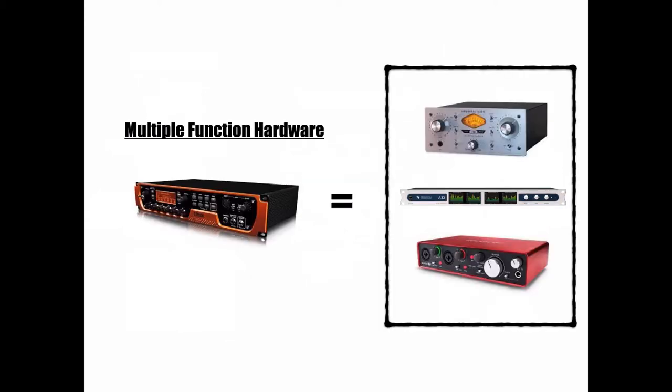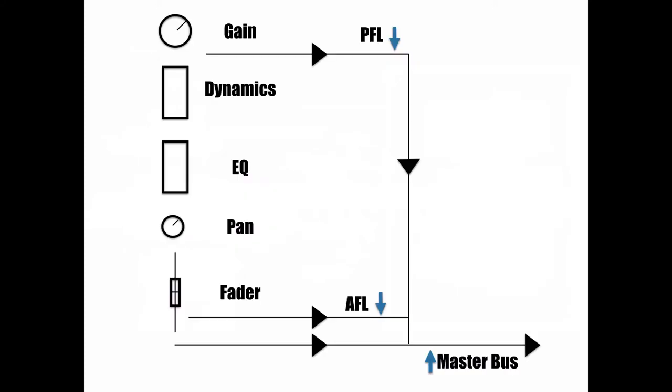Something to take note of is that there are devices out there that incorporate several of these steps in one device. For example, a hardware 11 rack can act as a mic preamp, audio interface, and A to D and D to A converters. The quality of each of these functions is usually not as good as if you were to purchase each component separately. However, there are many of these interfaces out there and they can help save room and money.